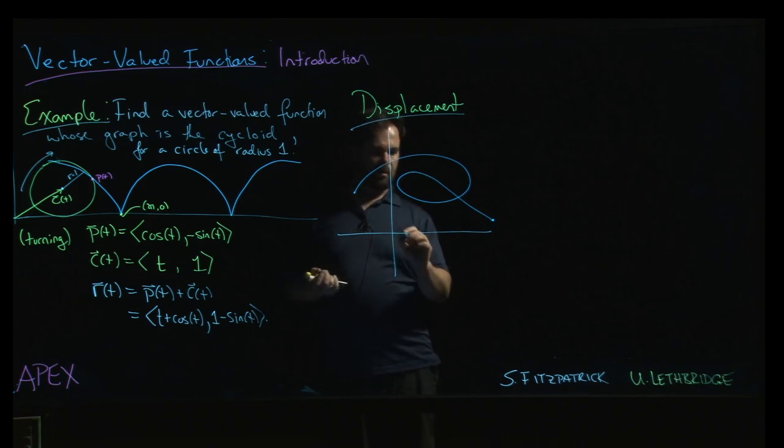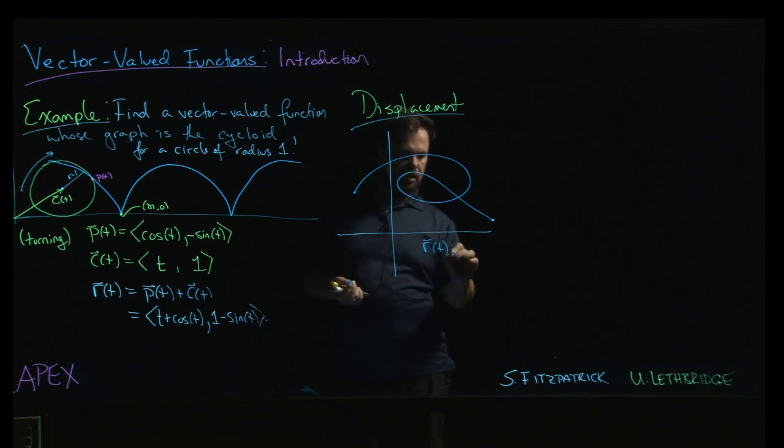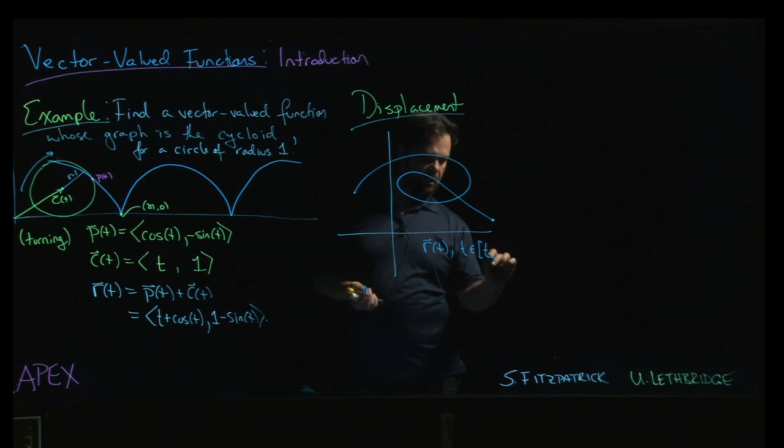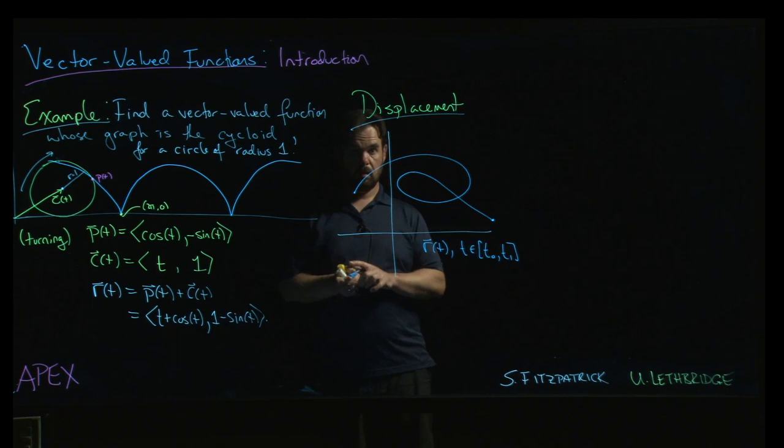And so this is the graph of some vector-valued function r(t) with t running from some initial value, say, t0 to some final value t1.